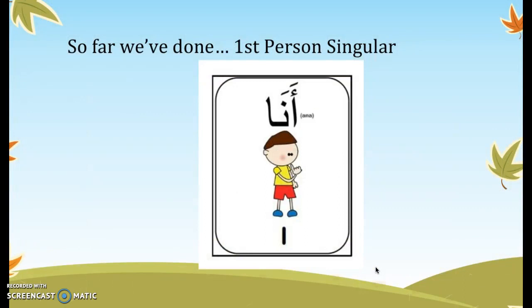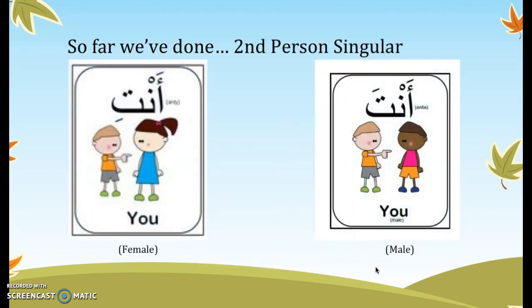So far, we've already done first-person singular pronouns. You guys already know how to say 'I' or 'me' — أنا. We know how to do second-person singular: أنت and أنتِ. Remember, if you're talking to someone who's male, أنت with a fatḥa. If you're talking to someone who's female, أنتِ with a kasra. So if I want to say 'you're a student': أنت طالب, أنتِ طالبة.